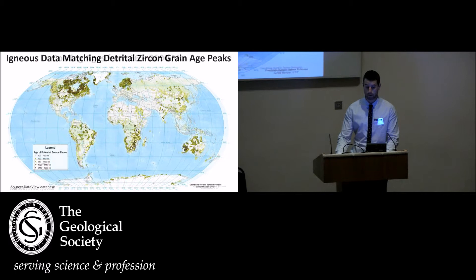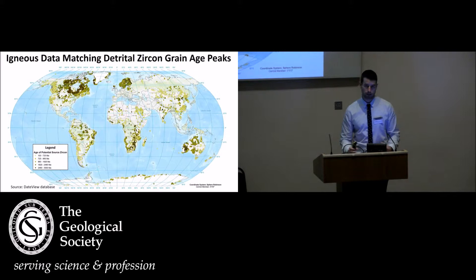I've also extracted cooling ages. Pretty good global extent there. And this is my igneous data matching detrital zircon grain age peaks. Essentially, this is a map showing potential provenance source locations for all my samples moving forward.